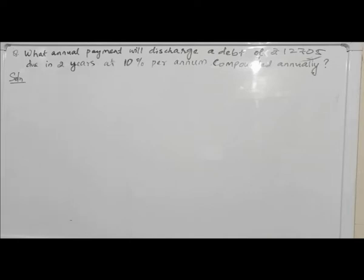What annual payment will discharge a debt of rupees? This is due in two years at 10% per annum compound interest. This is Class 10 mathematics.